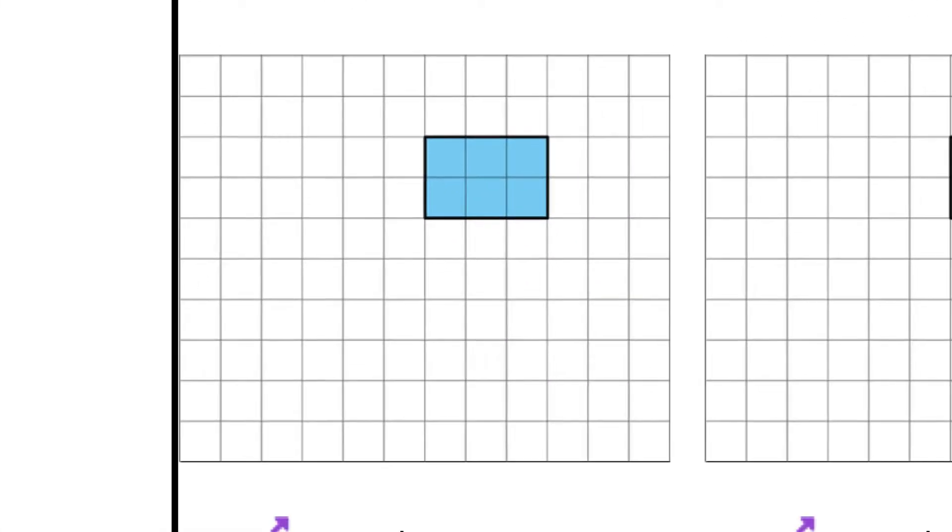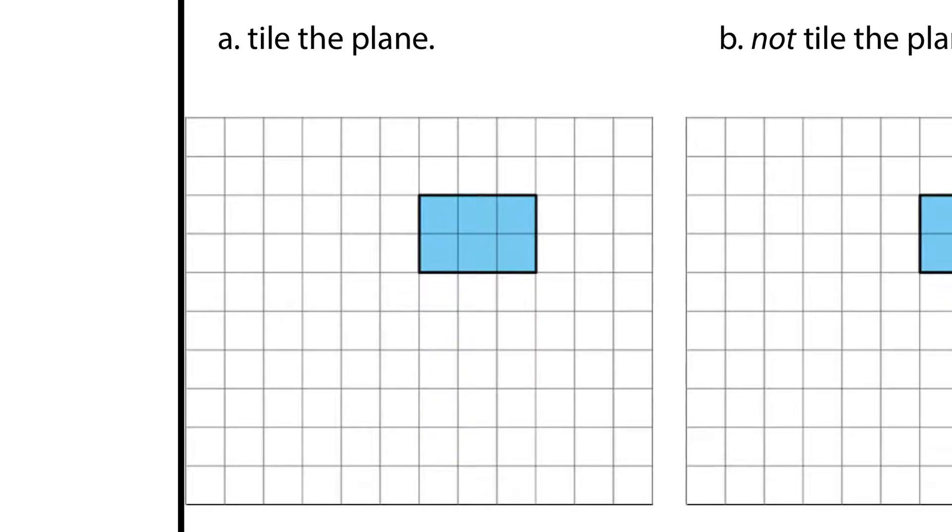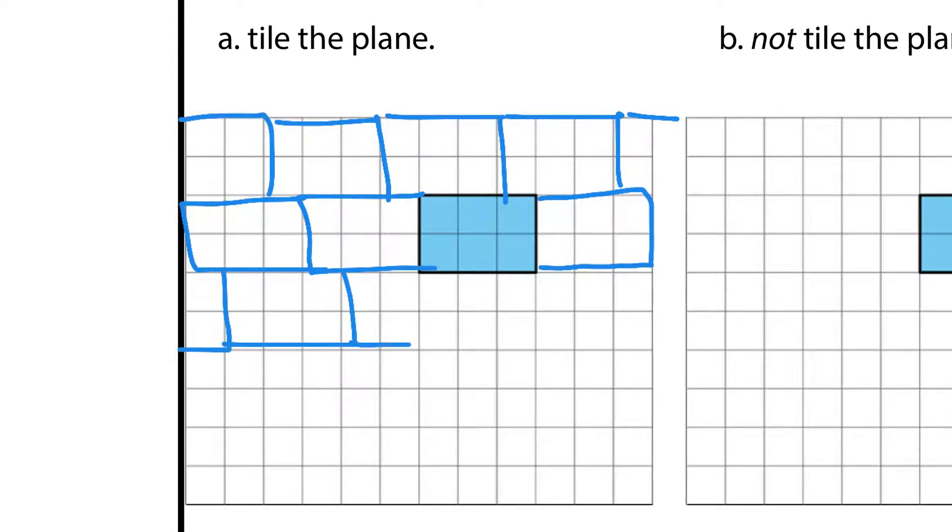So, if we look at tiling the plane here, this is 2 by 3, so I could just draw another 2 by 3 and just keep coming out like this. And then, what if I were to draw here, and then keep going 2 by 3, 2 by 3, 2 by 3, and this would just keep going.